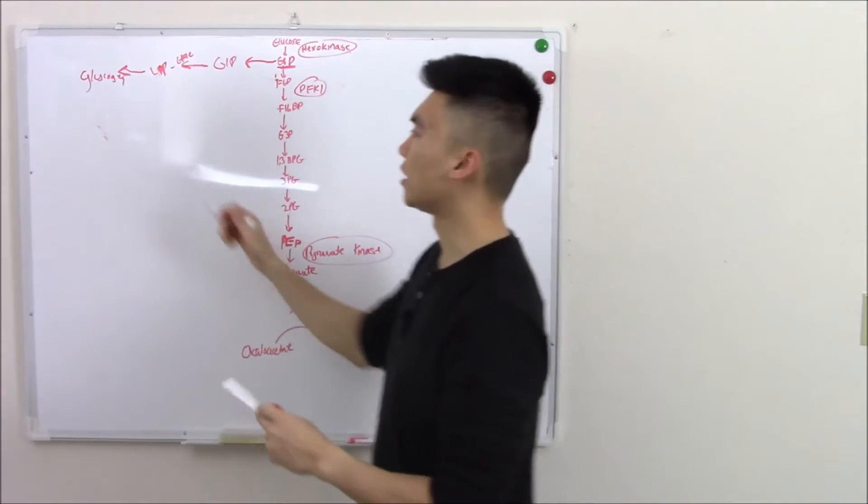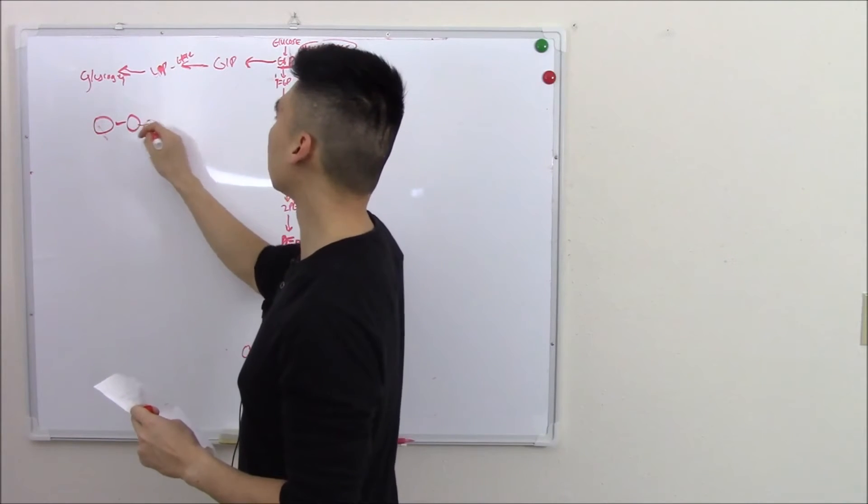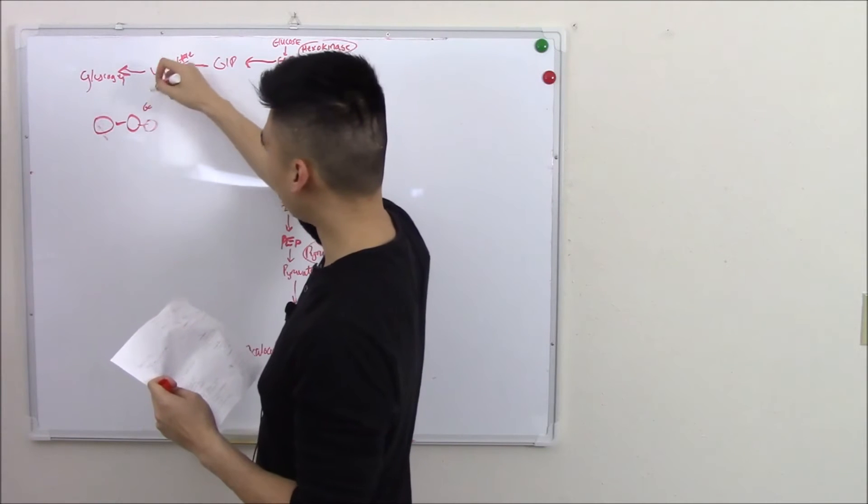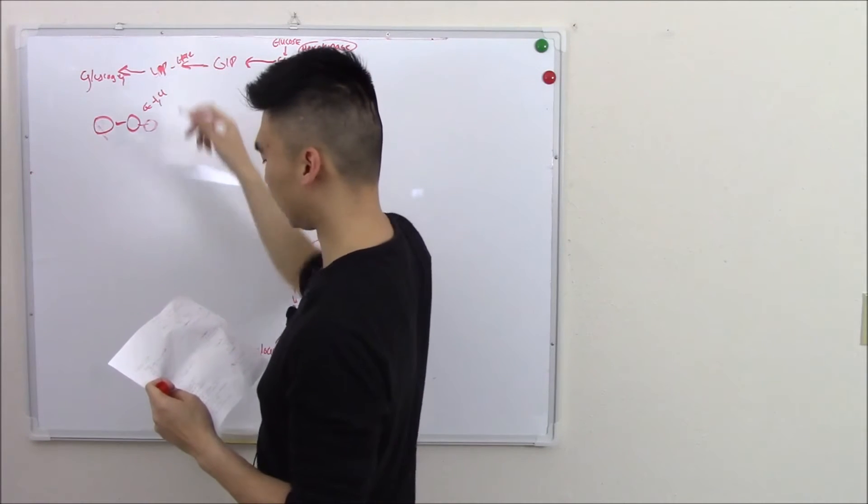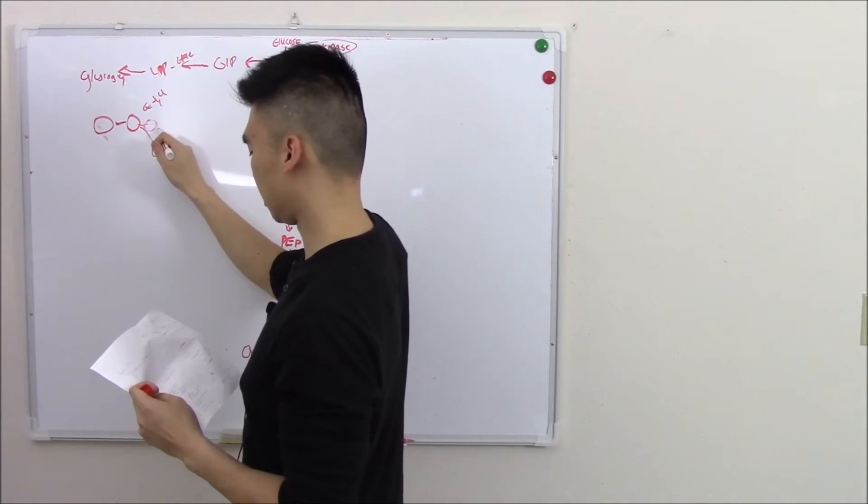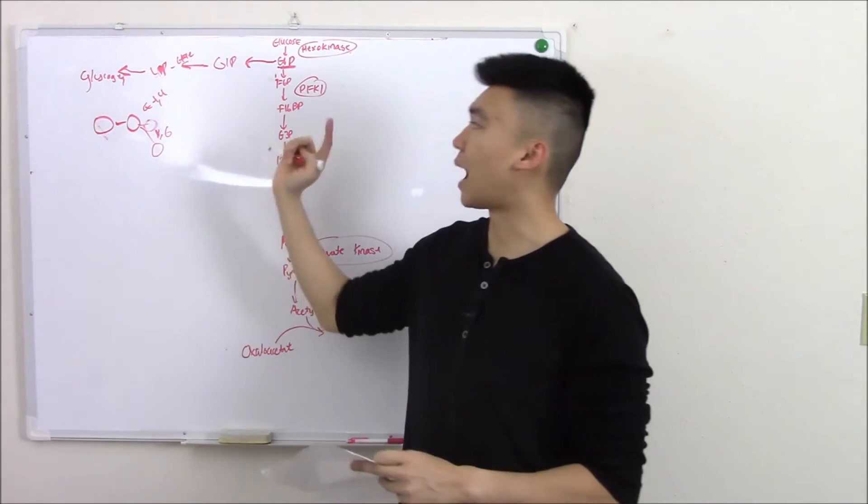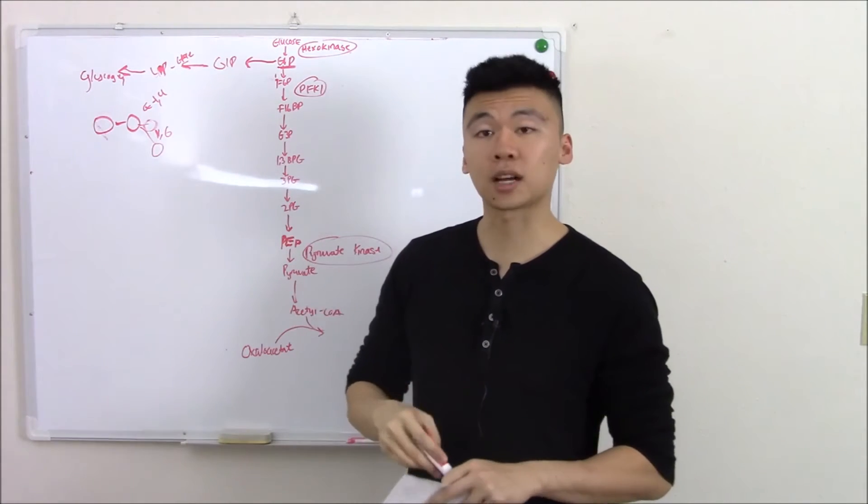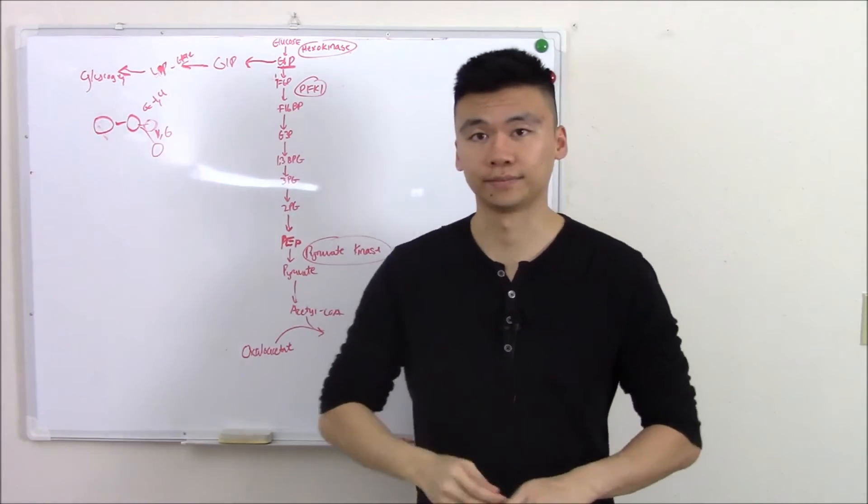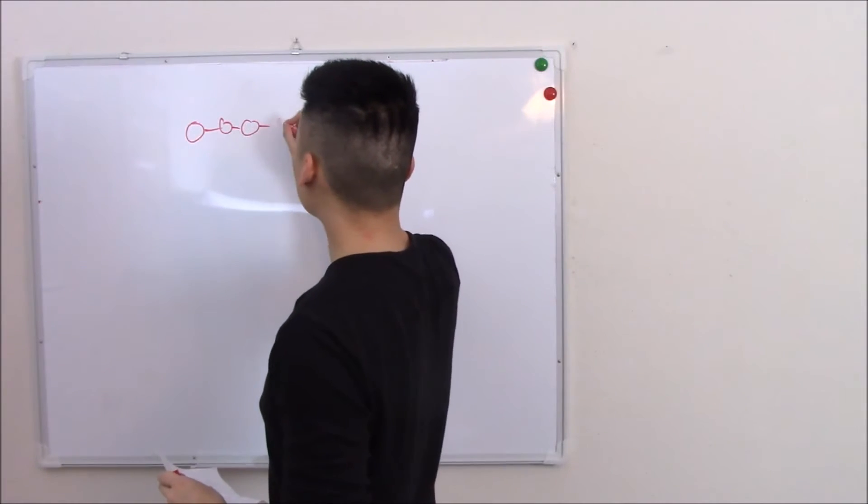So this is how you chain UDP glucose. You can chain them side to side via alpha 1-4 chains, or you can branch them via 1-6 chains. That is how you create glycogen. Now let's talk about how you break down glycogen.